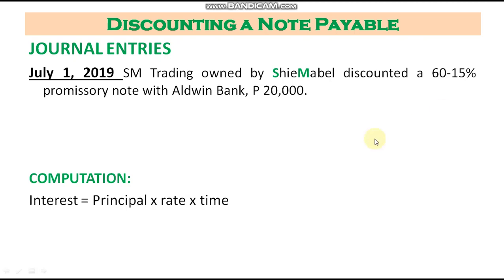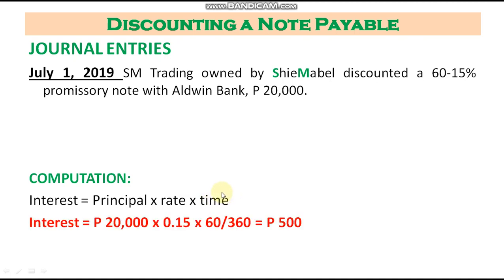Our principal is 20,000, our rate is 15%, and our time is 60 days. The rate should be expressed in decimals and time should be expressed in years. So the computation is: interest = 20,000 × 0.15 × (60/360) = 500 pesos. Our interest is 500 pesos.